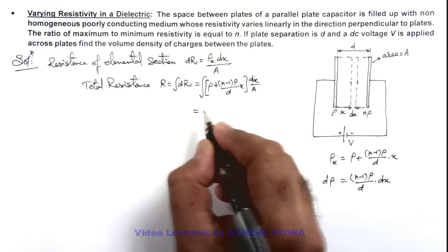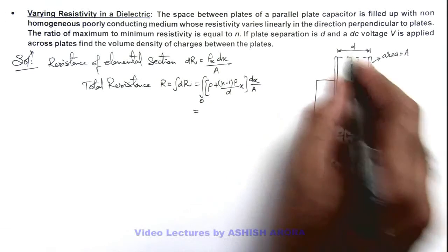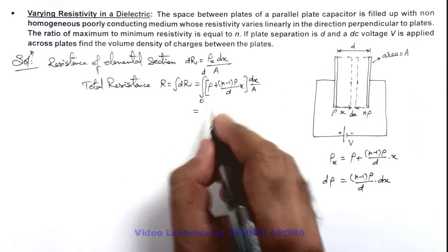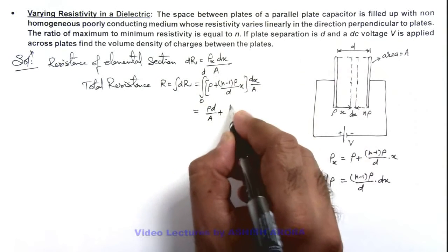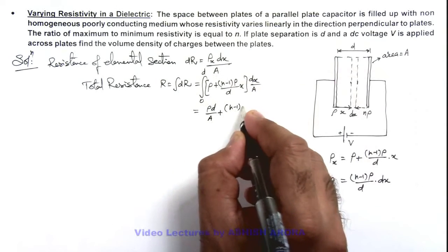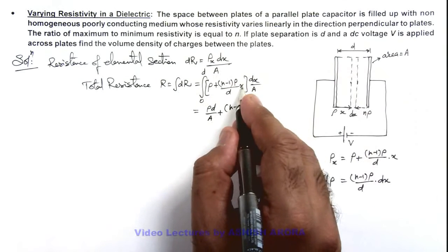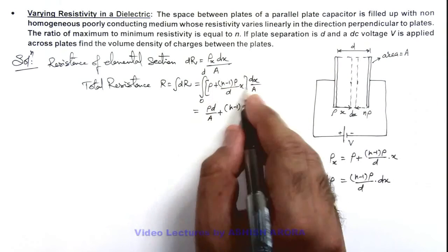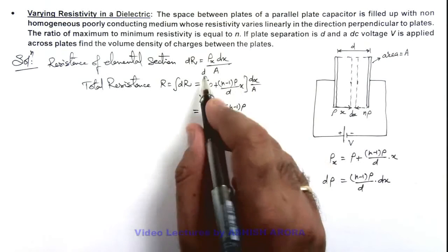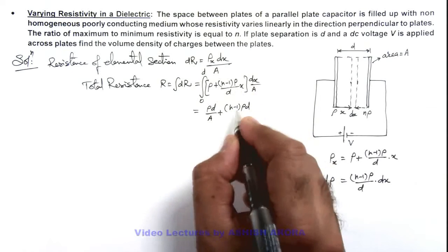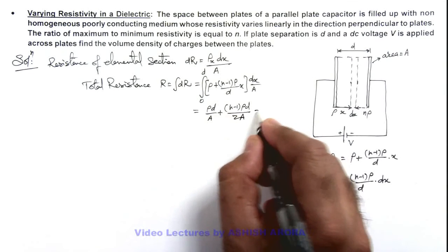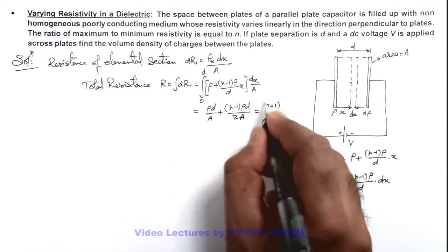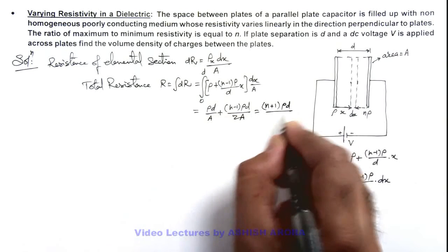Then this value is coming out when we integrate it from zero to d. This will be ρ₀d/A plus this (n-1)ρ₀, this x will be integrated as x²/2. On substitution of limits from zero to d we get it as (n-1)ρ₀d/2A. And further simplifying, this is giving us (n+1)ρ₀d/2A.